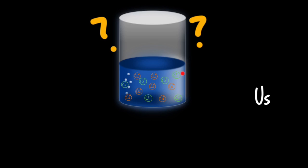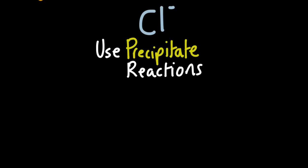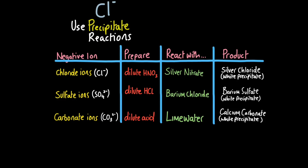So we've used flame tests to identify the copper ion because it turned the flame green. But how do we identify the negative ion, the chloride ions? Well for this we need a completely different type of test we call precipitate reactions. And that's because a precipitate will form which will indicate the ion in the solution. So this table contains everything you need to know about precipitate reactions for your exam. There are only three negative ions you need to test for. Chloride ions, sulfate ions and carbonate ions. Obviously all of them are non-metals. You can see the ionic formula here.